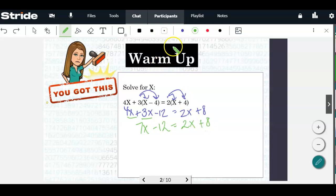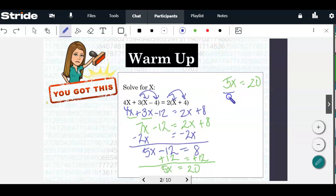Now we're going to get our variables on the same side. I'm going to subtract 2x from both sides. 7 minus 2 is 5x minus 12, and we're left on the right side with just 8. Now we have a two-step equation. Add 12 to both sides. 5x equals 8 plus 12 is 20. This last step, divide by 5, and x is 4.